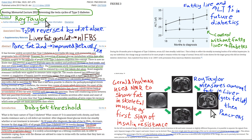Roy Taylor's 2012 Banting Memorial Lecture describes how type 2 diabetes is reversed by diet alone. He calls it a twin cycle theory: the first cycle is fat accumulation in the liver causing inability to control blood glucose, leading to increased fasting blood sugar. The second cycle involves the pancreas accumulating fat. On a low-fat diet, liver fat reverses first. He notes different people have different body fat thresholds, which is why some obese people don't develop diabetes while thin people do — partly also because of pancreatic beta cell destruction from omega-6 oils.